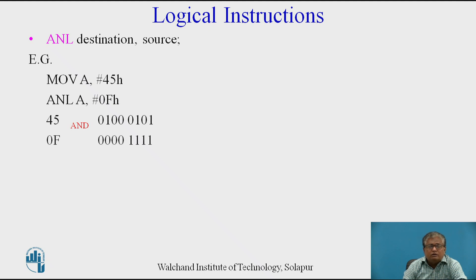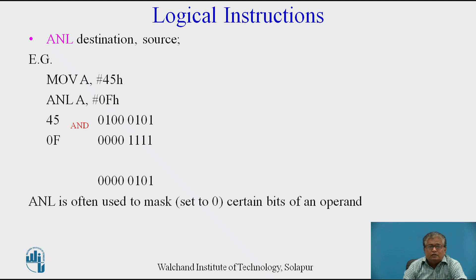45H in binary is 0100 0101. ANL with 0FH gives the result 0000 0101, which will be stored in register A. The ANL instruction is often used to mask certain bits of an operand — that is, to set certain bits to 0.